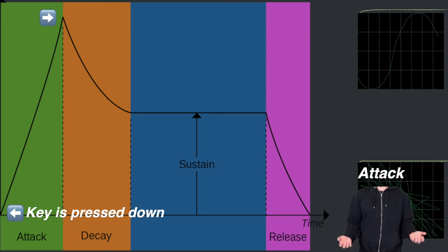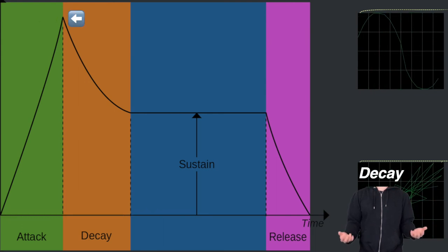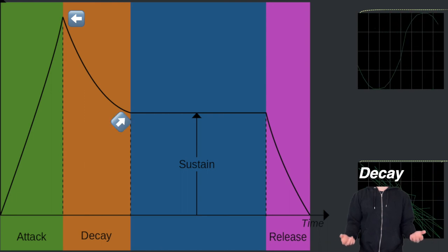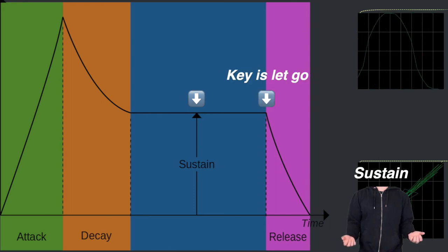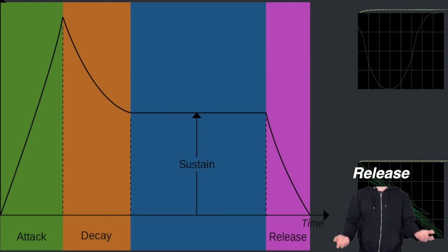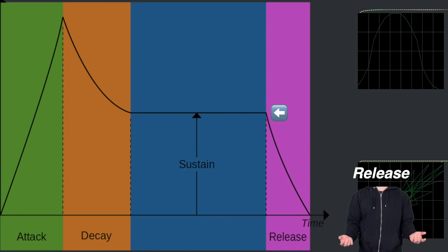Decay is the time it takes from the peak level to a set sustain level. Sustain is the level that a sound maintains until the key is released. And release is the time it takes from the sustain level to zero after a key is released.